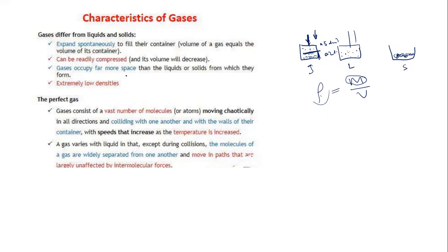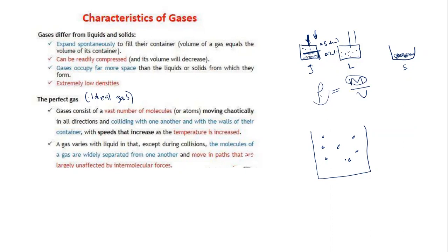Now let's talk about the perfect gas, also called the ideal gas. Something ideal means it is perfect. Say you have a container filled with gas molecules placed far apart from one another. If we ask whether there is attraction between two gas molecules, an ordinary person would say no — because they are placed far apart and it seems there is no force between them.